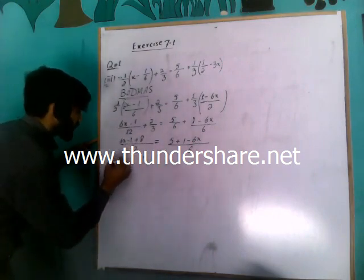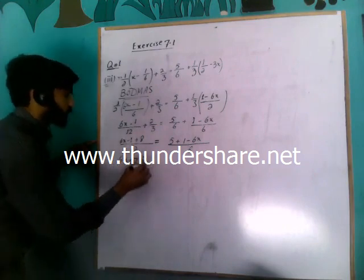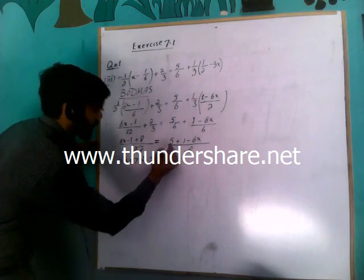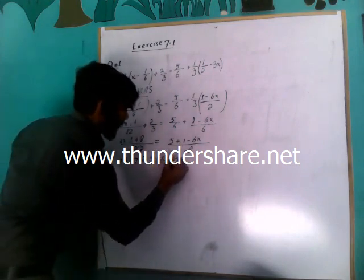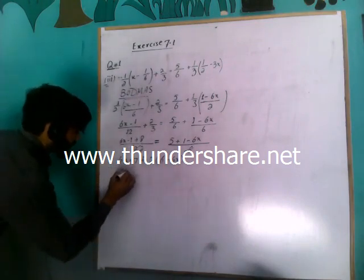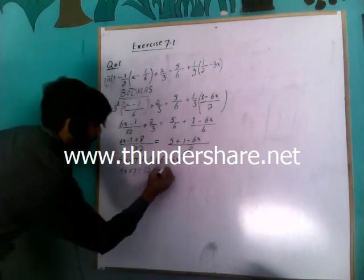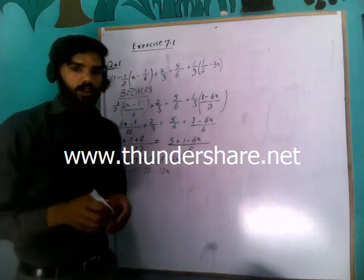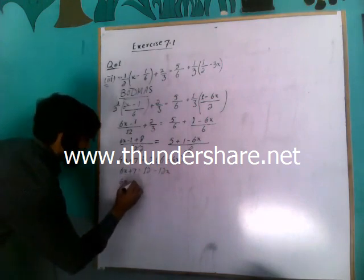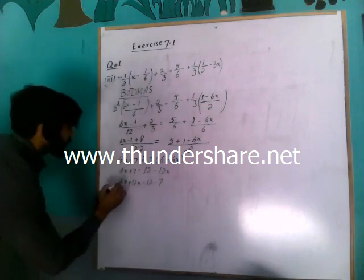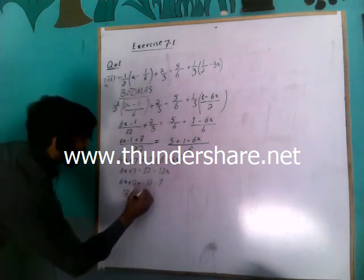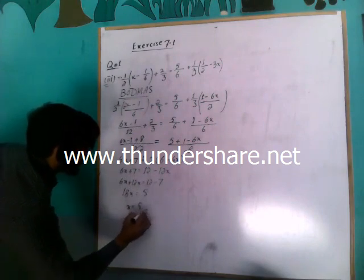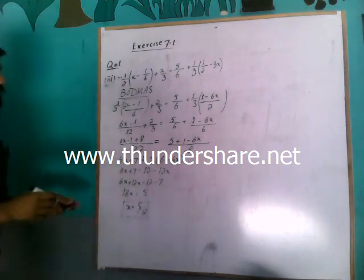After cross multiplication, 6x plus 7 is equal to — the denominators cancel — 2 will come. 2 multiplied gives 2 into 6 giving 12, so 5 plus 1 gives 6. So 6x plus 7 is equal to 12 minus 12x. Now we take variables to one side and constants to the other: 6x plus 12x equals 12 minus 7, giving 18x equals 5. So x is equal to 5 over 18.